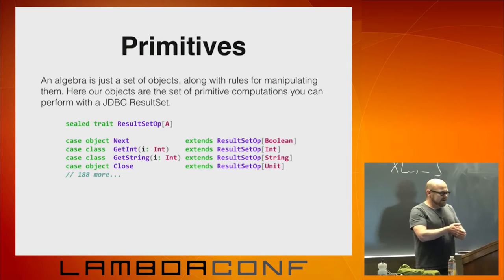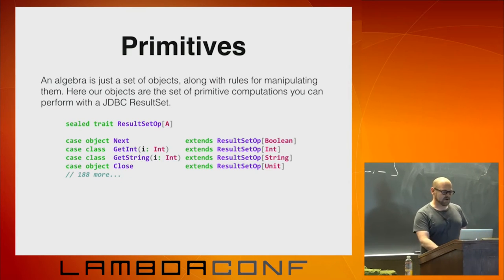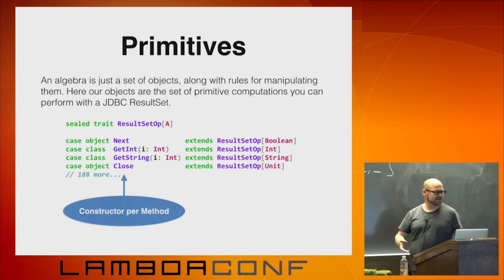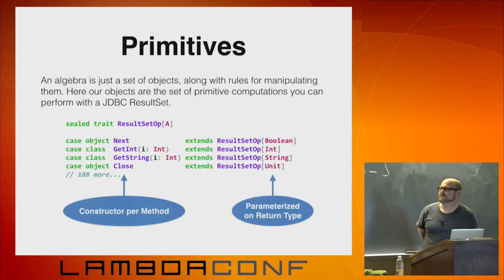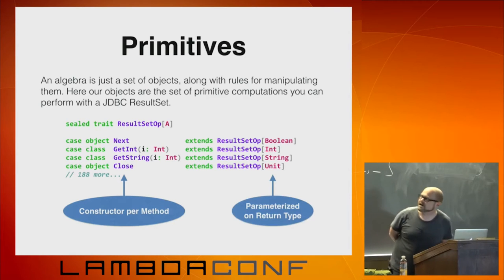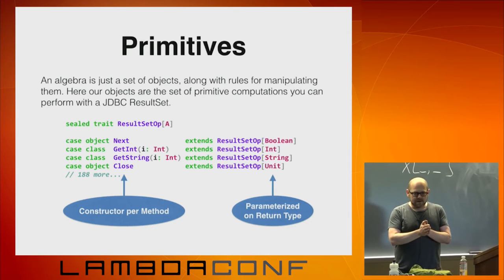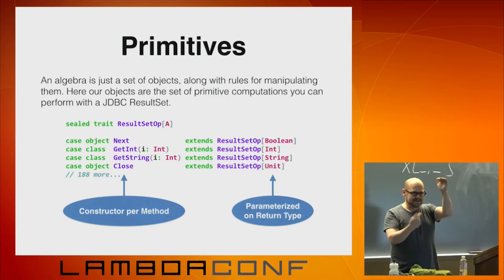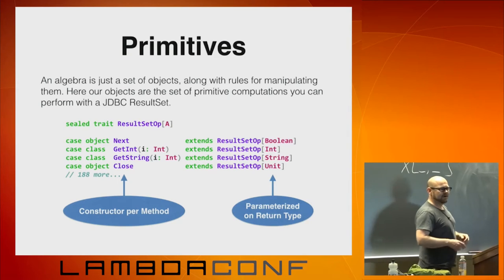We define a data type that describes the operations we can perform, in this case on a result set. We have a constructor for every method on a result set — there are about 190 operations. This type is parameterized on the return type of that operation. So just given this description of the operations we can perform, we could write a little program — that's just a list of instructions we want to do. Then we could write an interpreter that takes this list and a result set and gives us a list of answers back. That's not going to be very useful — you get a list of Any back and there's no composition — but you can kind of see where I'm going.